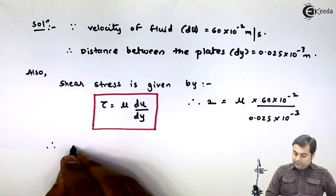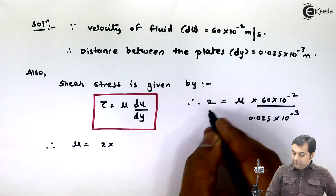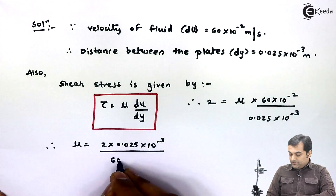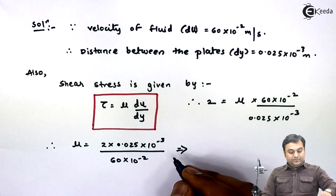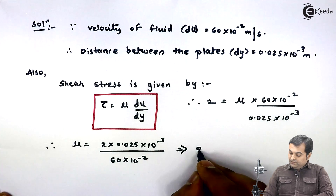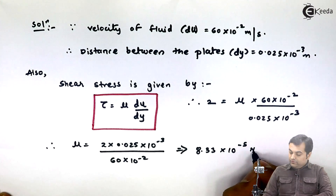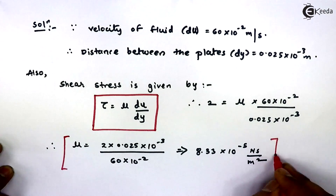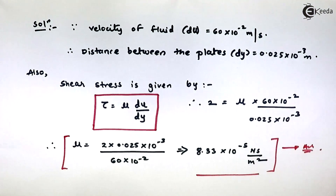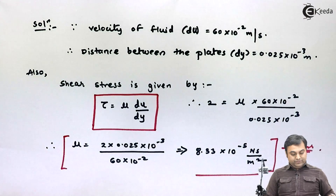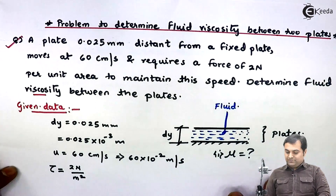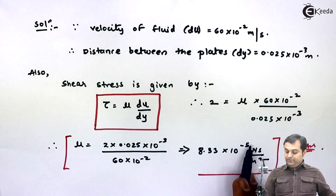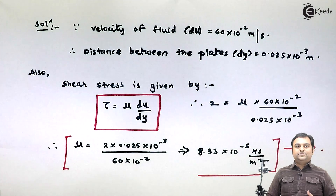Therefore, mu equals 2 multiplied by 0.025 into 10 raise to minus 3, divided by 60 into 10 raise to minus 2. This gives the dynamic viscosity as 8.33 into 10 raise to minus 5 Newton second per meter square. The problem asked for fluid viscosity, which is dynamic viscosity — not kinematic viscosity. So our answer is 8.33 into 10 raise to minus 5 N·s/m².